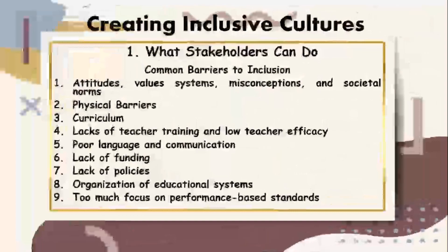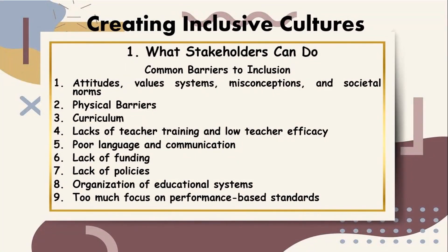These are the common barriers to inclusion. Number one: attitudes, value systems, misconceptions, and societal norms — these can lead to prejudices and actual resistance to implementing inclusive practices. Next: physical barriers — lack of building, facility, transportation, or road accessibility — these are types of physical barriers that can literally affect one's mobility. Next: curriculum — a rigid one-size-fits-all type of curriculum that does not allow room for individual differences can significantly stunt one's learning and opportunity for growth.